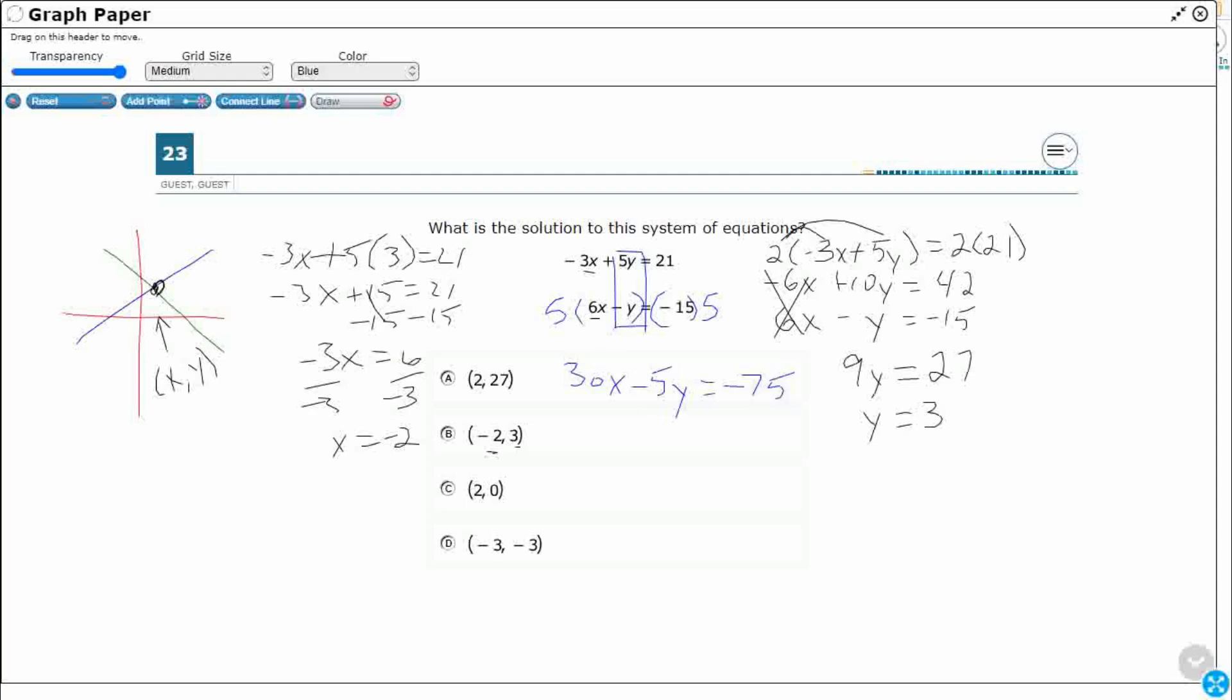Now, let's add that to that first one. -3X plus 5Y equals 21. Add those together. That's going to cancel out, which is what we're looking for. 27X equals, it's going to be a negative 54, right? Divide both sides by 27.